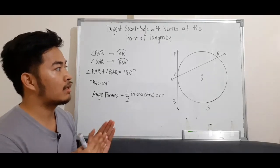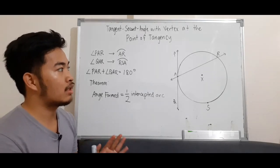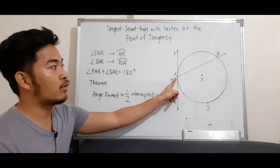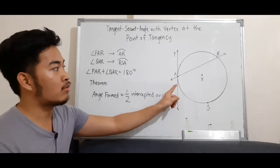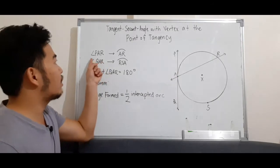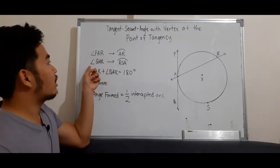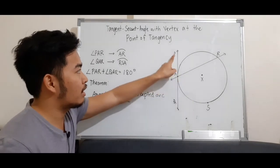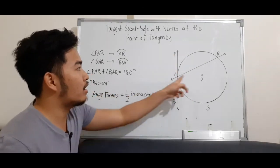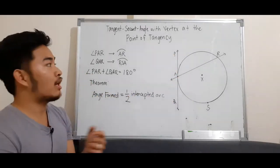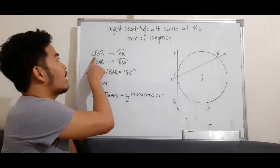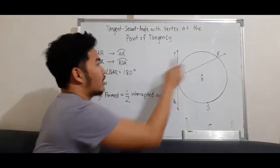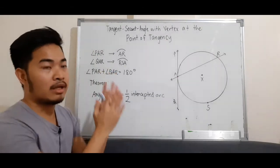When the tangent and secant intersect at the point of tangency, an angle is formed. So we have angle PAR and angle QAR. Let's focus on these two. For angle PAR, we have arc AR as its intercepted arc, because that arc is opposite to that angle.